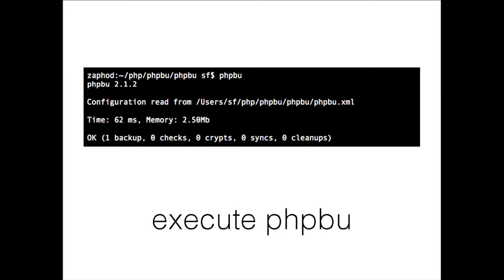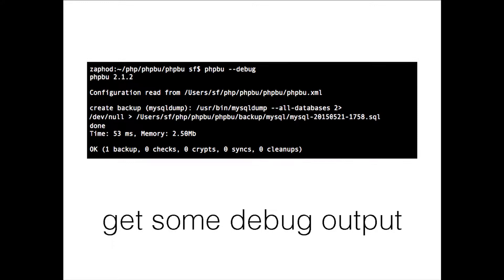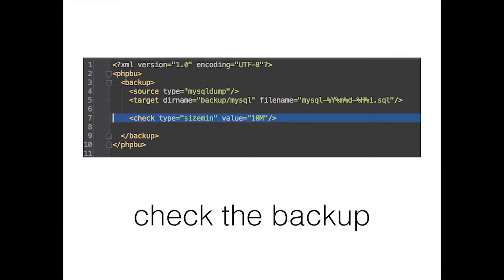If you want to get some debug information and know what's going on in the background, you can just add the debug flag and see what arguments are actually being executed. Now, to check the backup we've created — this is one of the checks you can do with PHPBU: check your backup for minimum size. Here it's specified as 10 megabytes, and if your backup isn't big enough, you will get an error message so you know something may have gone wrong.